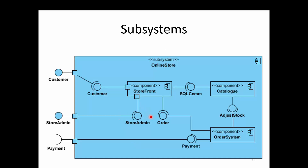Here we have another example — this is called a subsystem. How we identify this as a subsystem is by the notation element named 'subsystem' shown here. When you check the same for a component, that notation element is represented as 'component'. Here we have 'subsystem' as the notation element. Therefore, when we have 'subsystem' as the notation element this represents a subsystem, and when we have 'component' in the notation element it represents a component.